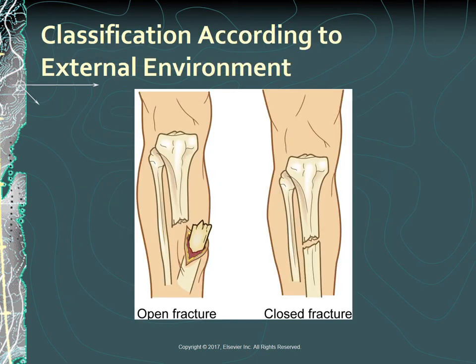Fractures can be classified as open, formally called compound, or closed, formally called simple, depending on communication or non-communication with the external environment. You can look at Figure 62-6. In an open fracture, the skin is broken, exposing the bone and causing soft tissue injury. In a closed fracture, the skin has not been ruptured and remains intact.